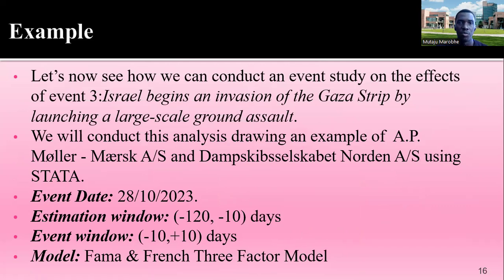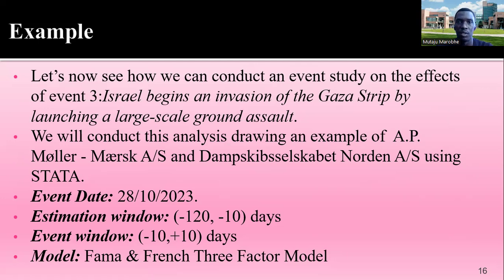Now I'm going to demonstrate how we conducted the event study methodology using Stata software. We will focus on event number three: Israel begins an invasion of the Gaza Strip by launching a large-scale ground assault. We draw examples from Maersk and D. Norden — large shipping companies. The event took place on 28th October 2023. The estimation window runs from 120 to 10 days before the event, and the event window runs 10 days before to 10 days after. The model is the Fama-French three-factor model.